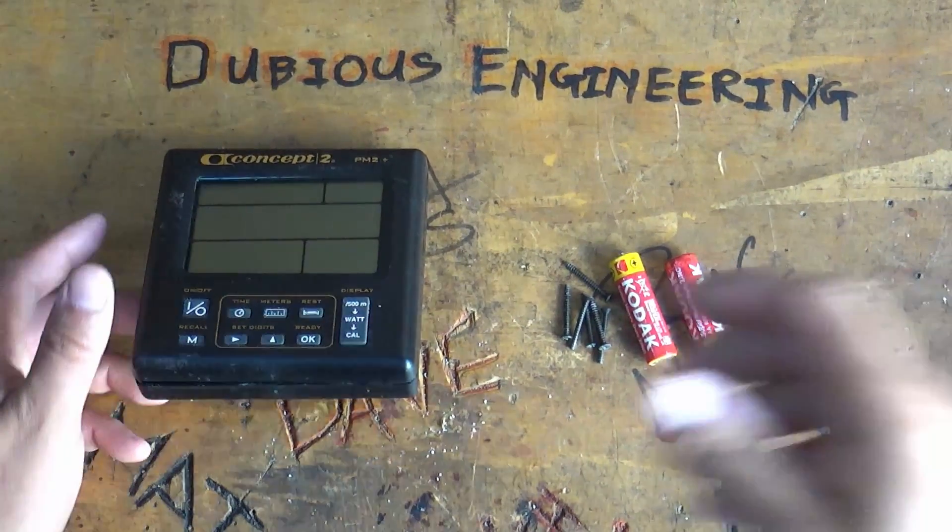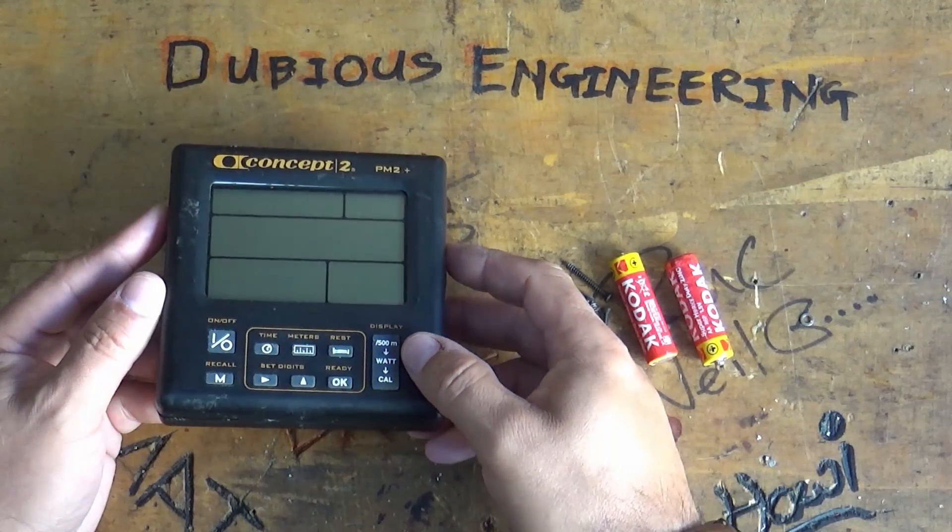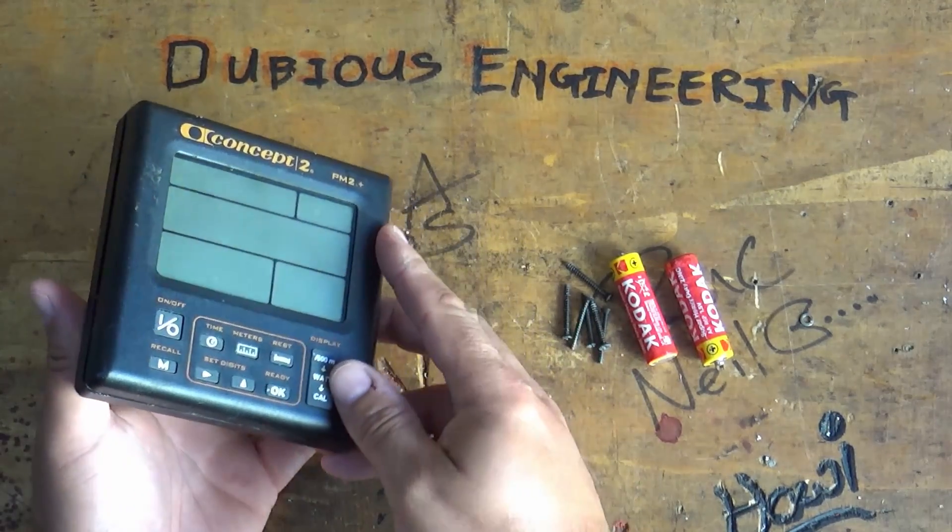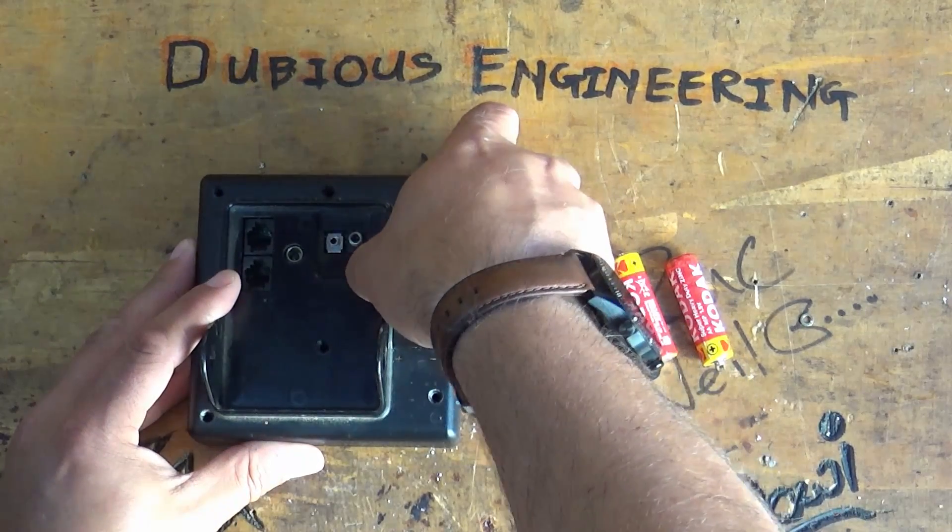What are we going to find in this? Is it going to be a completely dead circuit board or are we going to be able to neutralize the acid and get this up and running again?